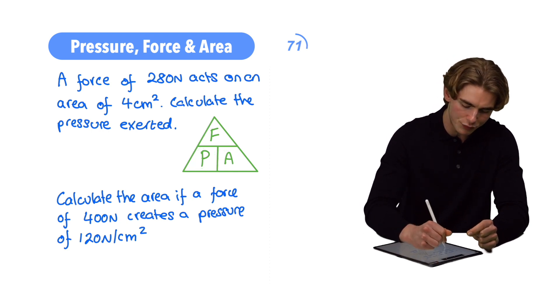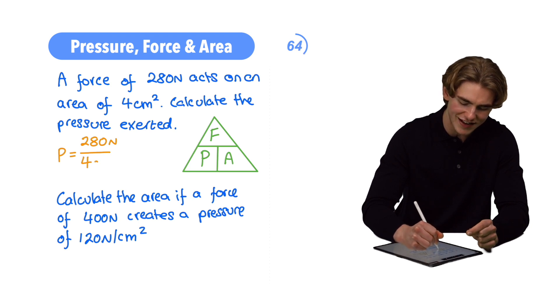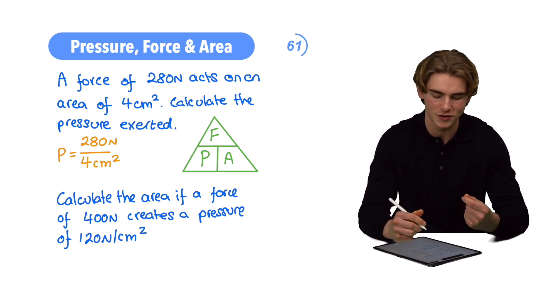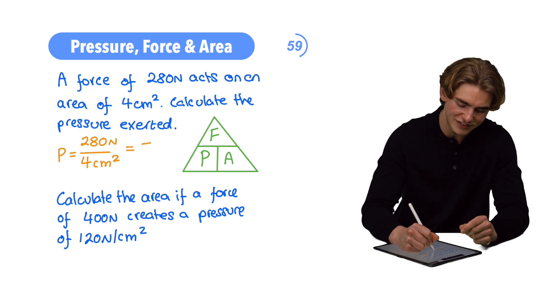So our pressure equals our force, which is 280 Newtons, divided by our area, which is 4 centimeters squared. 280 divided by 4 is 70. So we have 70 Newtons per centimeter squared.